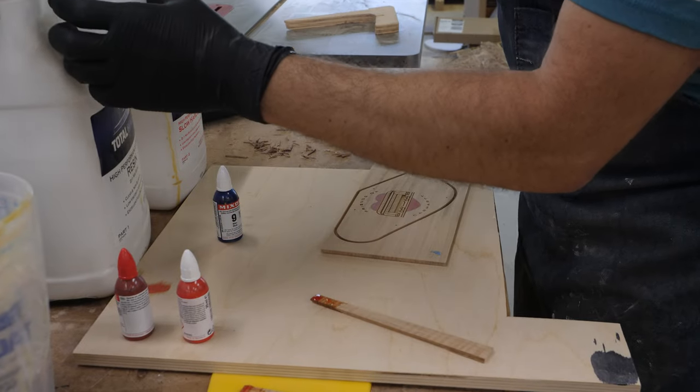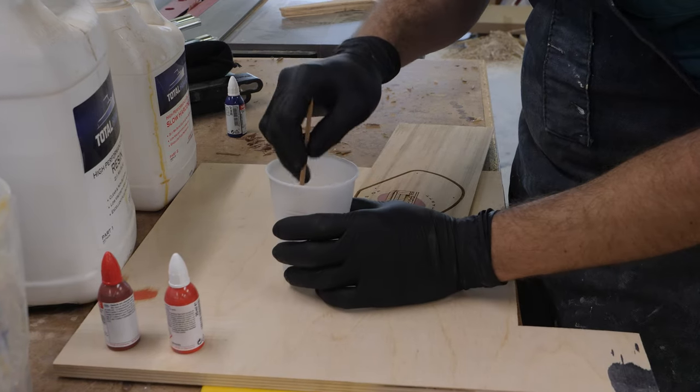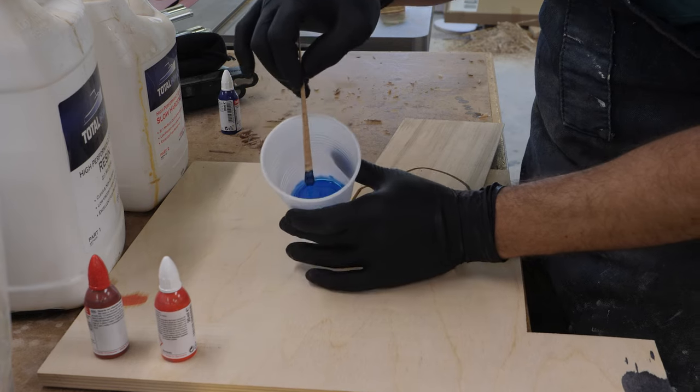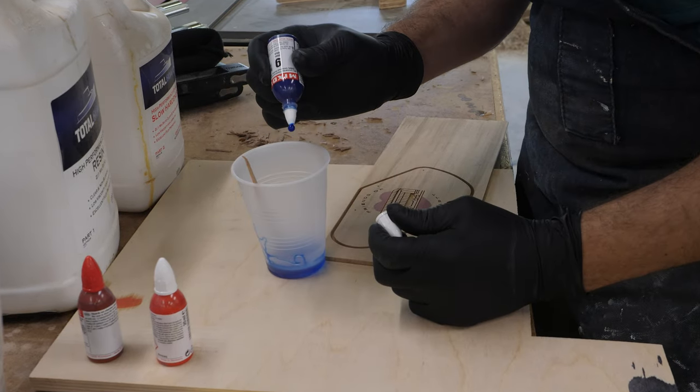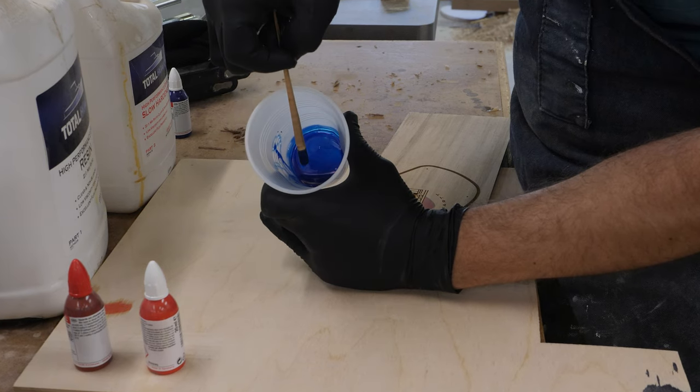Back at the bench, I start mixing up the epoxy for the second color in this project. And as you see, we're going for blue. So I get started mixing it up and check it every now and then. That's just a little bit too light. So another drop and I think we're going to be good to go. Yeah, that looks good.